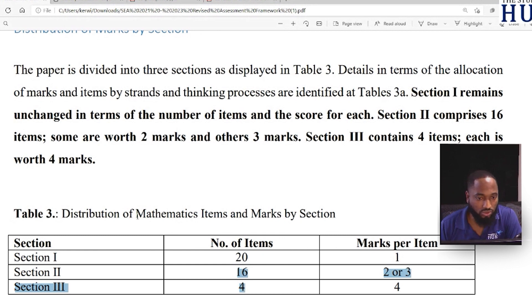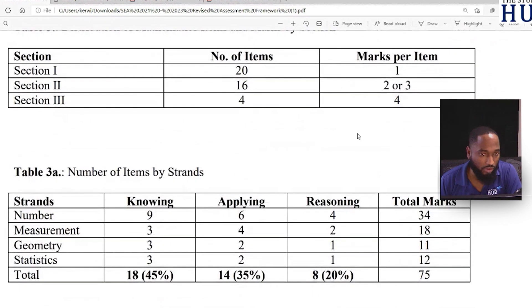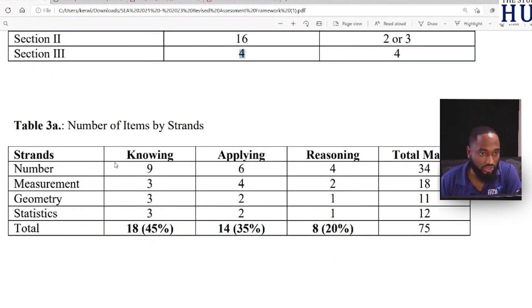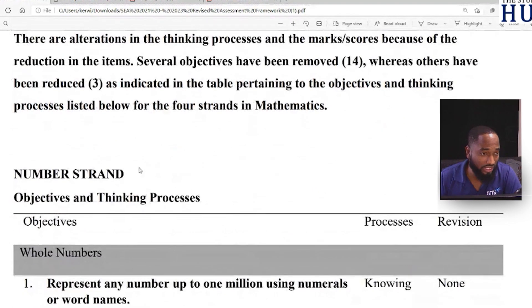Two or three marks, and then four items. Section two has 16 items worth two or three marks. Section three has four items in format - these are the really goliath questions for students. The different things we test on: knowledge, application, reasoning. Knowing is 45%, applying is 35%, and reasoning skills is 20%.